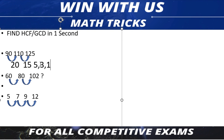Now you can list the factors: 5, 3, 1. Now you have to check starting from the highest number. Is 5 divisible into 95? Yes. Is 5 divisible into 110? Yes. Is 5 divisible into 125? Yes. So you can divide by 5 — the answer is 5.